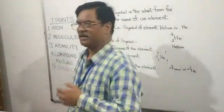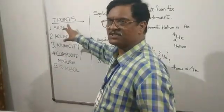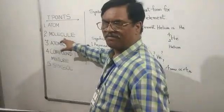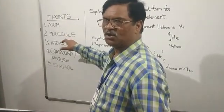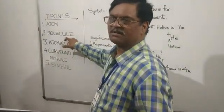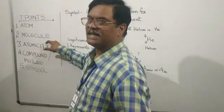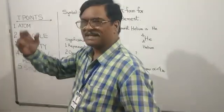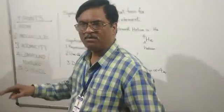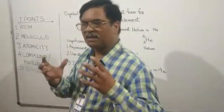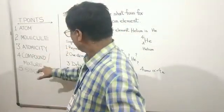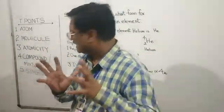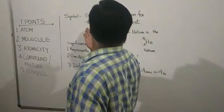Now it is time for recapitulation. Atom: atom is the smallest particle of an element which takes part in a chemical reaction — it may or may not exist independently. Molecule: when two or more atoms combine, they form a molecule; a molecule shows independent existence and is the smallest particle of matter in all states — solid, liquid, or gas. Atomicity: the number of atoms present in a molecule is called atomicity. Compound: in a compound, elements and molecules are present in a fixed ratio and they combine chemically. Mixture: in a mixture, elements and molecules are not present in a fixed ratio — they combine physically. Symbol: a symbol is the short form for the name of an element.